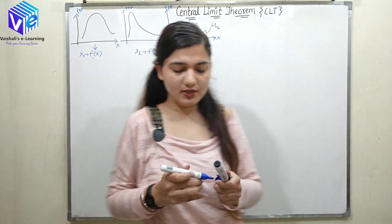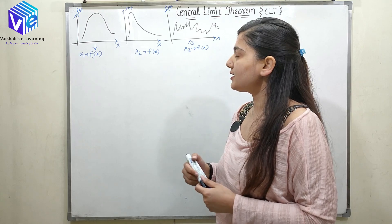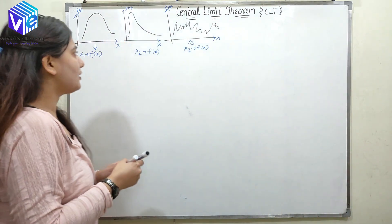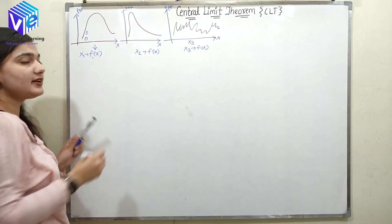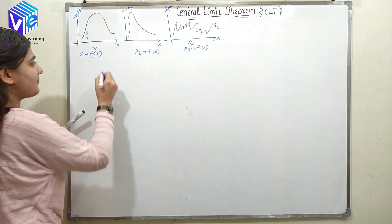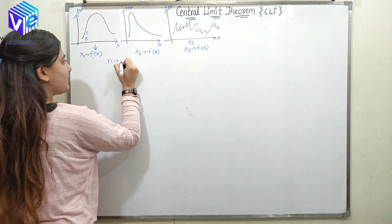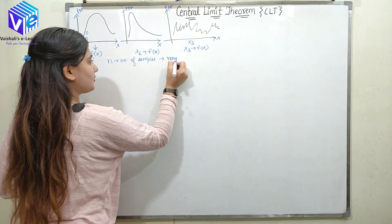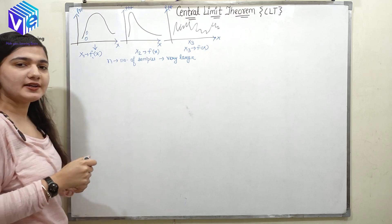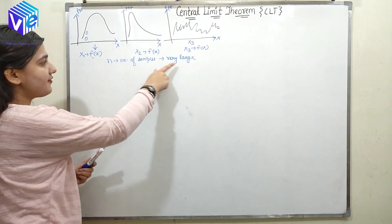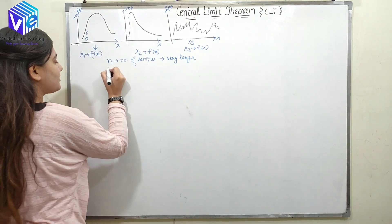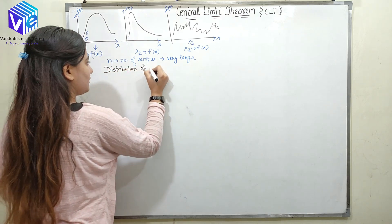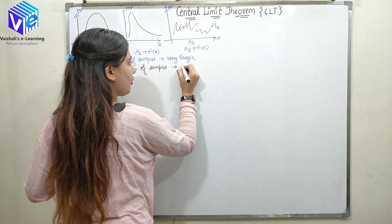So these are my three distributions. The central limit theorem states that if I take samples from these distributions — one sample here, one sample here — and if I take an infinite number of samples where n is my number of samples and n is very large, then the distribution of the samples follows a Gaussian distribution.